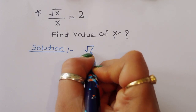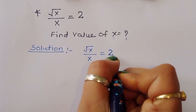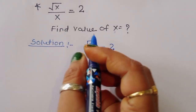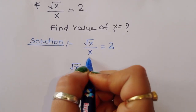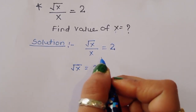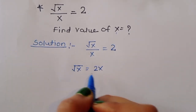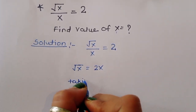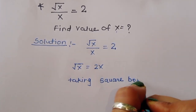Square root of x divided by x is equal to 2 — this is the question. We can do one thing here: by cross multiplication, square root of x is equal to 2x. Now taking square on both sides because we have to cancel this square root.